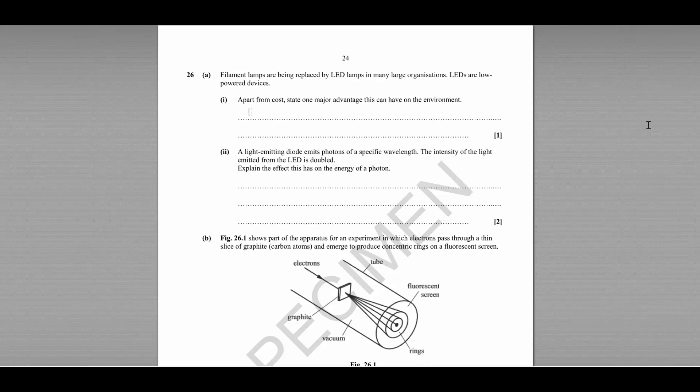Question 26 begins by considering the advantage of LEDs over filament lamps. Apart from the cost, what's a major advantage to the environment? Well, there were two really. One is that because LEDs last much longer, they will produce less waste because they will have to be replaced less often. Or also they use less energy.